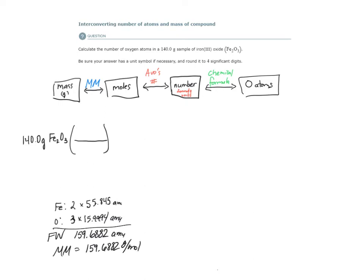So that's our first conversion factor. We can express it like this. In one mole of Fe2O3, there are 159.6882 grams of Fe2O3. Let's continue on.